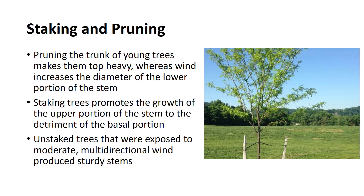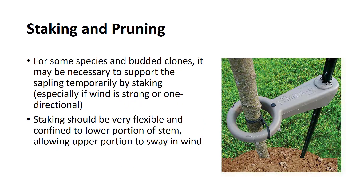Unstaked trees that were exposed to moderate, multi-directional wind produce sturdy stems. One objective in producing shade trees in a nursery is to develop a straight, strong leader. For most species, this can be accomplished by allowing the saplings to sway in the wind.